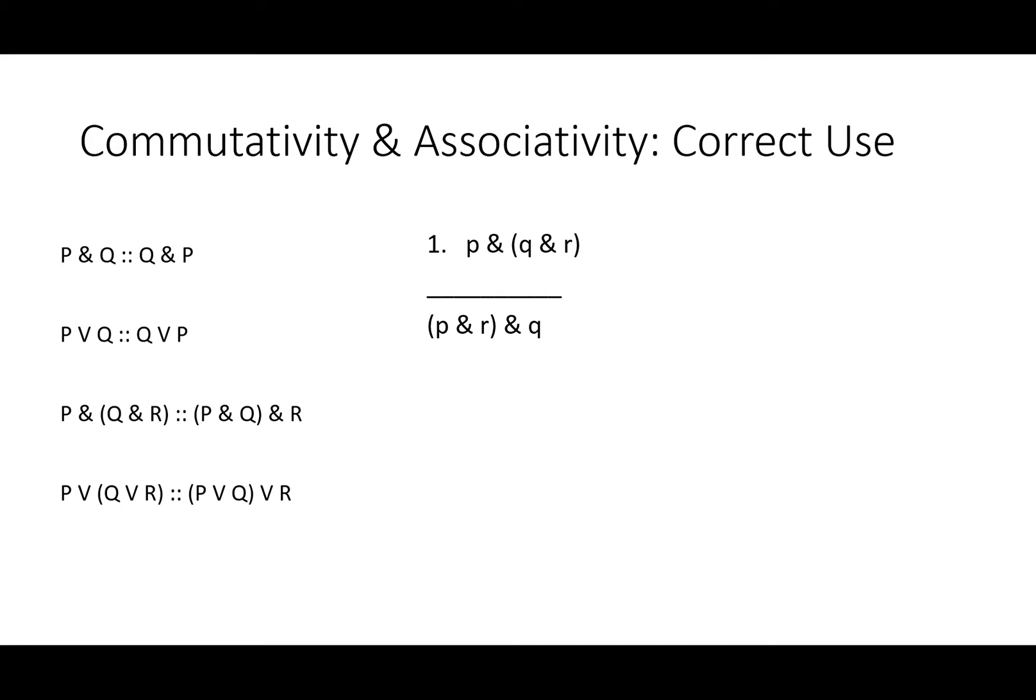Let's take a look at correct use of commutativity and associativity. Without these rules, this proof might be rather hard, but with them, it's easy. P and Q and R is the same as P and R and Q. Let's use commutativity and switch the order of these variables around inside the parentheses. Now let's use associativity and move the parentheses from the second two variables to the first. And just like that, we're done.